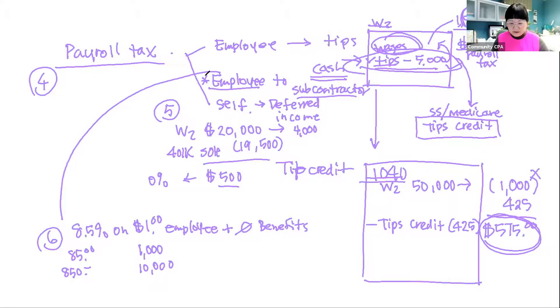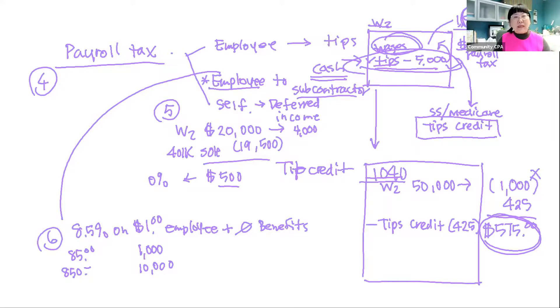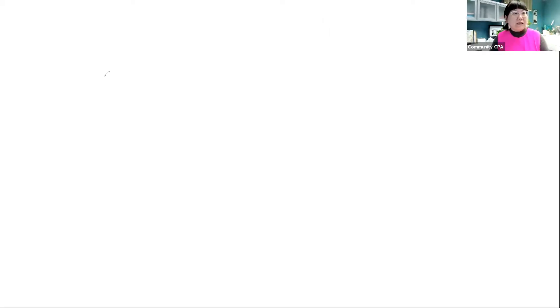That's free money number six. We've now covered sales tax, property tax, and payroll taxes. Now we go to income tax, and there's so much opportunity here. Right now, income tax free money is centered around what's called the CARES Act. You don't have to read all of it — just listen and understand the concepts so you can ask smart questions of whoever handles your books and taxes.